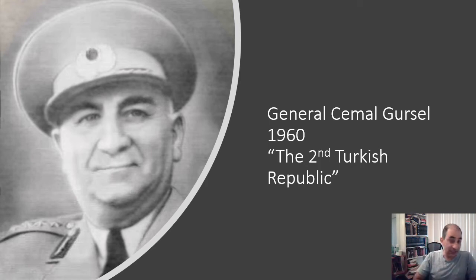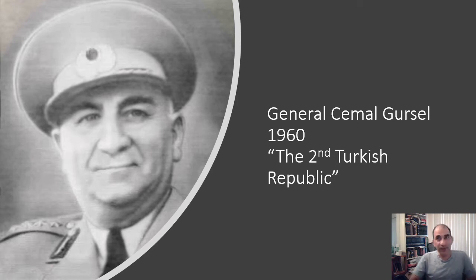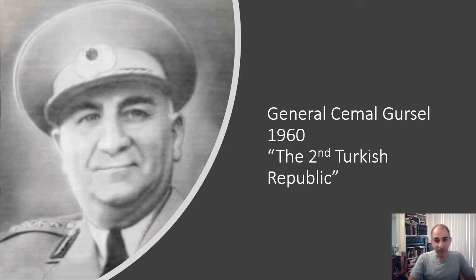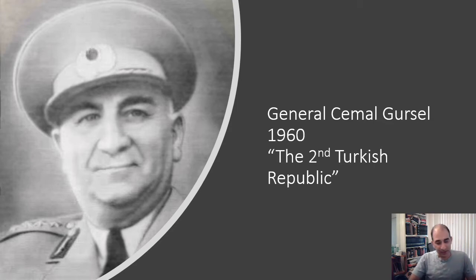This is sometimes referred to as the Second Turkish Republic, because they saw the period of Bayar as a bad time. And now we're back, via a military coup — Gürsel is a general. So this was not just another election; they had a coup. Even though we think of Turkey as a democratic nation, it's not always that smooth. People felt that's how corrupt it was becoming under Bayar. So General Gürsel comes in as the new president in 1960, giving you the Second Turkish Republic.